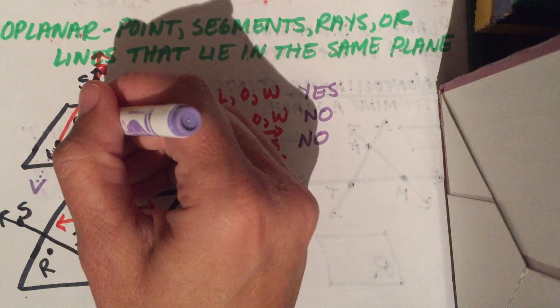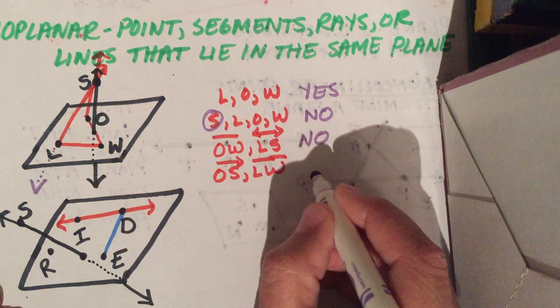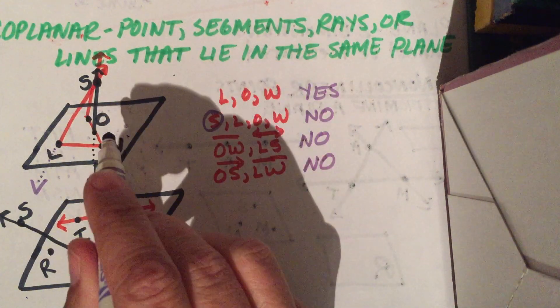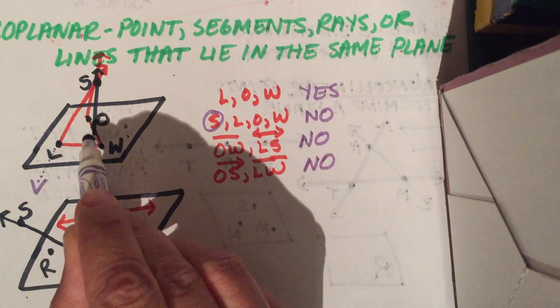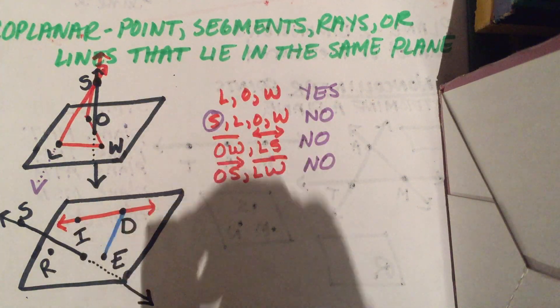How about ray OS, which is right here, and segment LW? No. Those are non-coplanar. Some other things to look at: when you see the little dots, that means it goes through and passes underneath. That'll help you with the 3D.